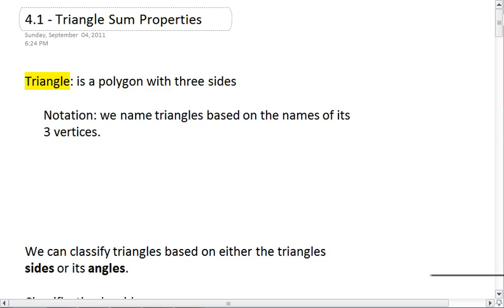In chapter 4, we get to explore triangles. So in section 4.1, we'll look at triangle sum properties. First of all, recall a triangle is a polygon with three sides. Our blue shape up here is a triangle.